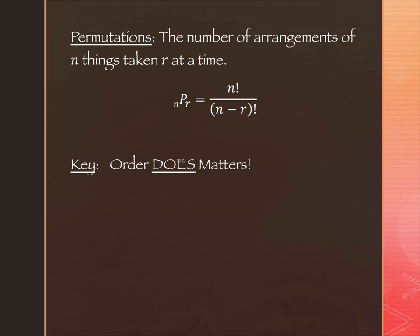So permutations is first. A permutation is the number of arrangements of n things taken r at a time. So you'll notice on the formula, it's got these little subscripts. There's a subscript n sort of in front of P and a subscript r after P. The n factorial is on the top, and then the n minus r factorial is on the bottom. And that's almost something we saw in 10.2. We almost saw that exact formula. It was really close to that.